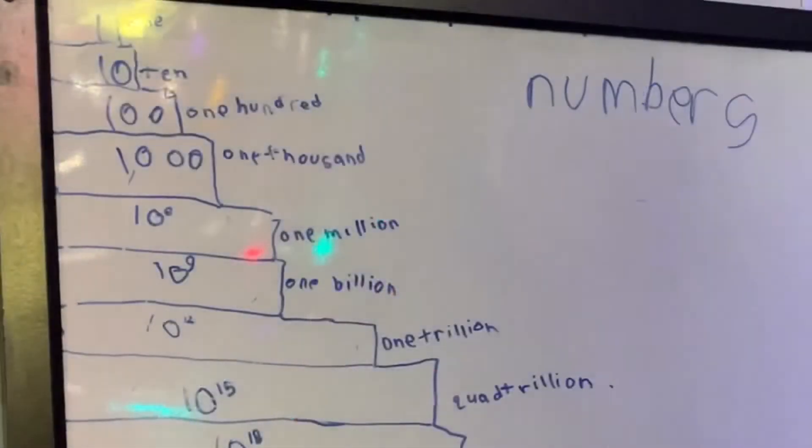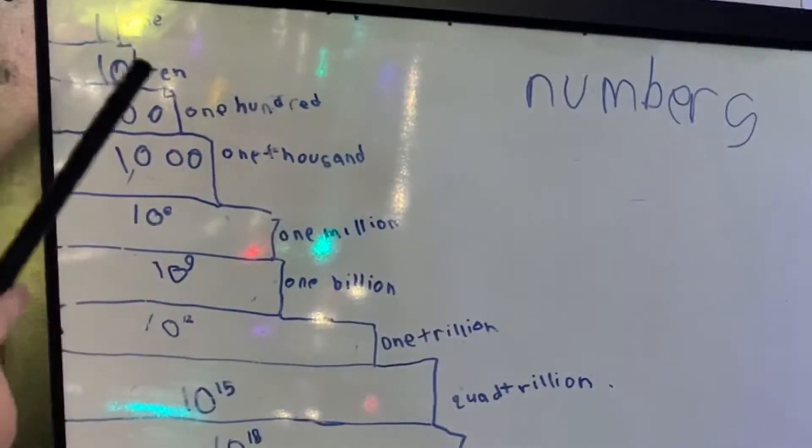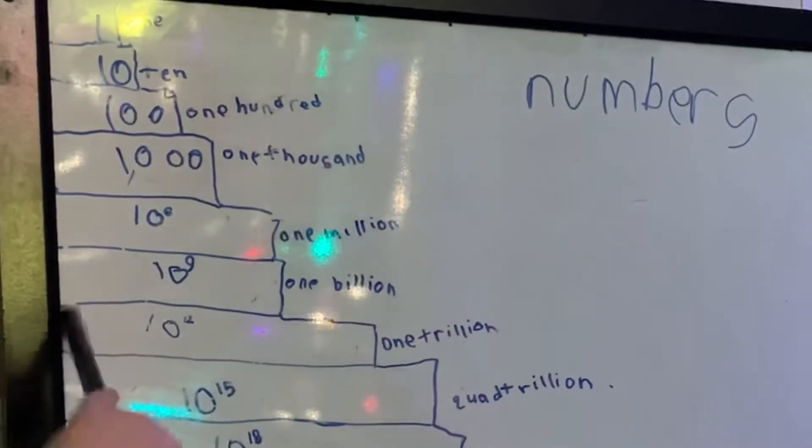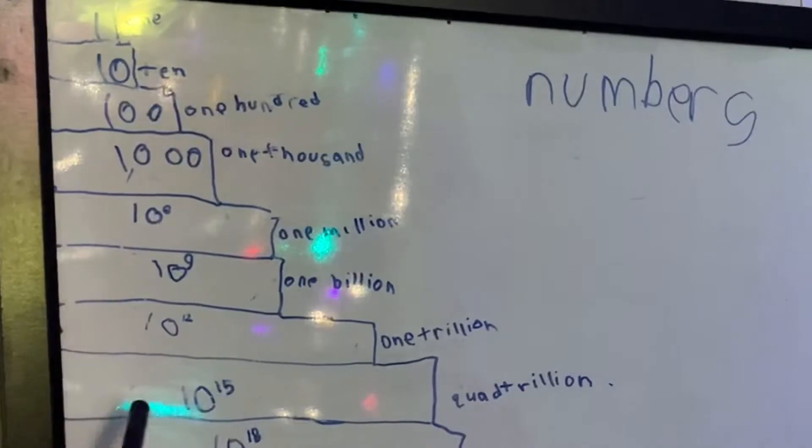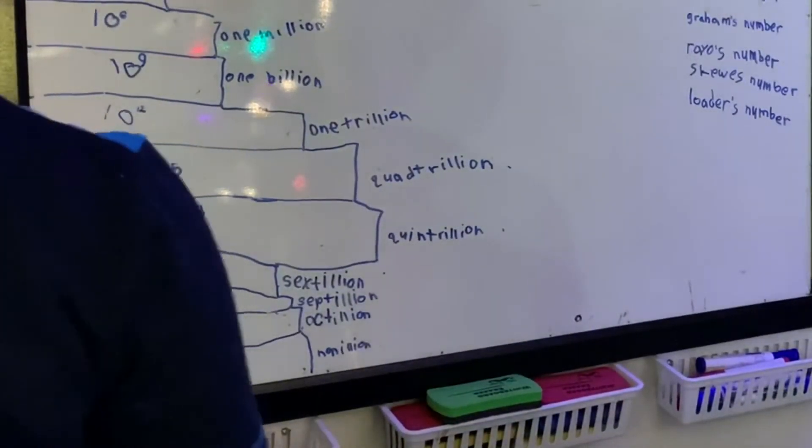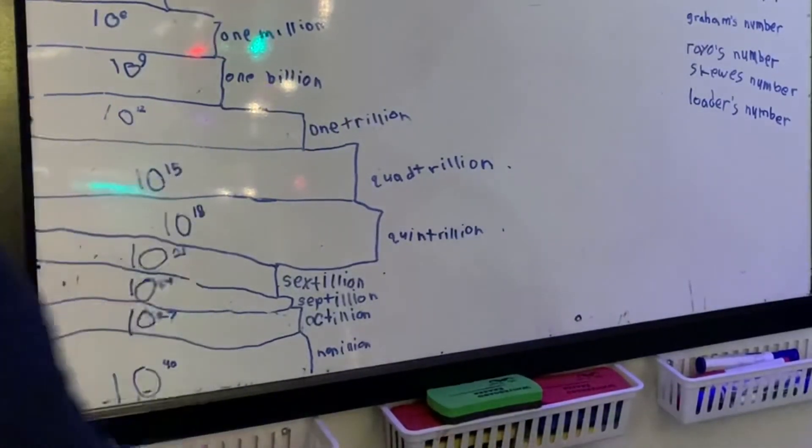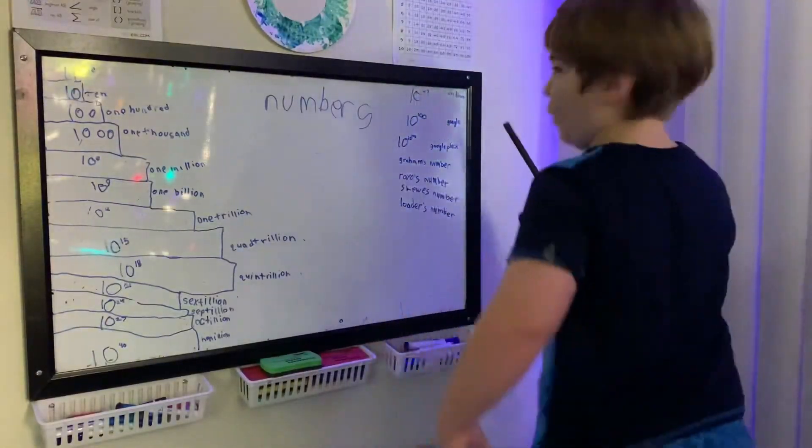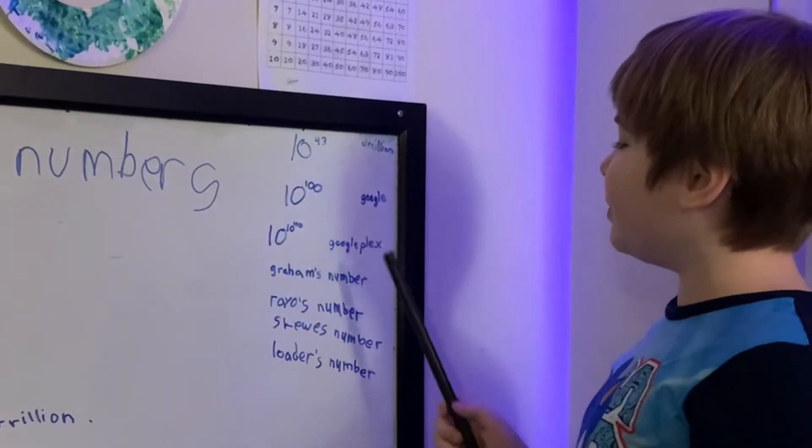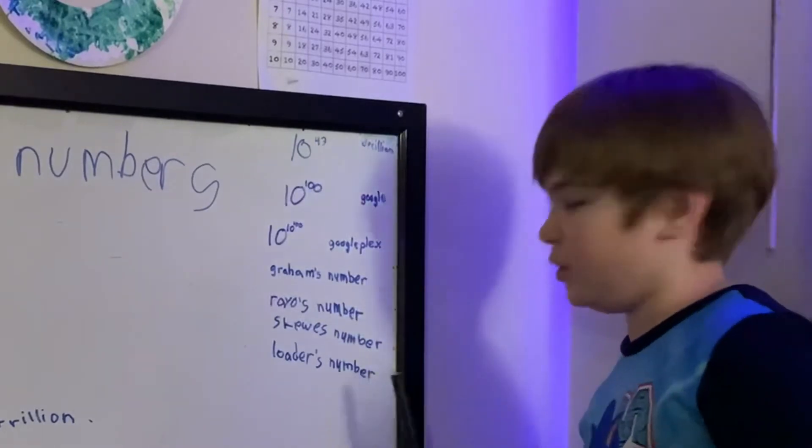There is 1, 10, 100, 1000, 1 million, 1 billion, 1 trillion, quadrillion, quintrillion, sextillion, octillion, nonillion, decillion, Google, Googleplex, Gram's number, Ryo's number, Skewer's number, Newger's number.